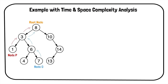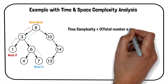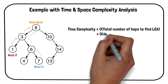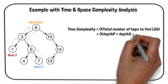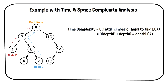The time complexity of this algorithm is the total number of hops required to find the lowest common ancestor, which equals the depth of node p plus the depth of node q minus the depth of the lowest common ancestor node. Both depths include the depth of the lowest common ancestor node, which is traveled only once, so we subtract it from the total. Constant space is used in this solution to store the two pointers.